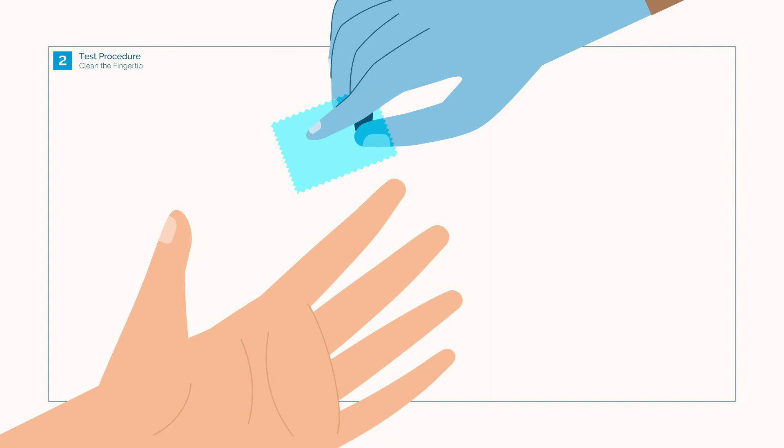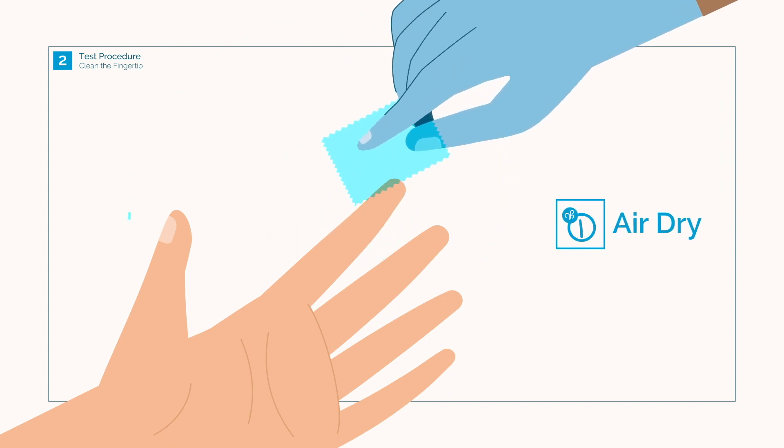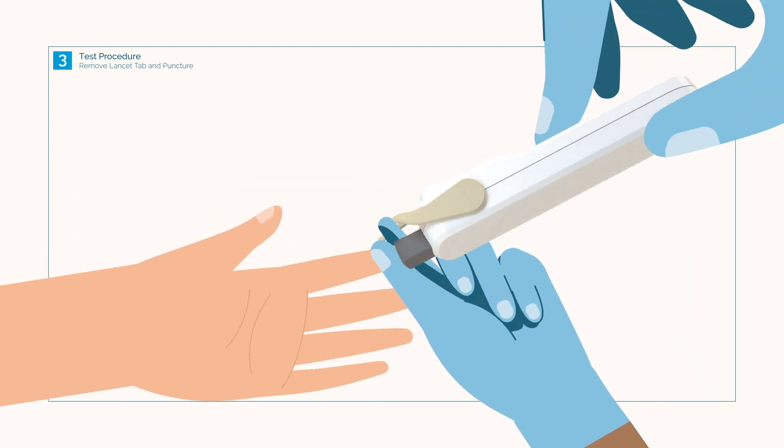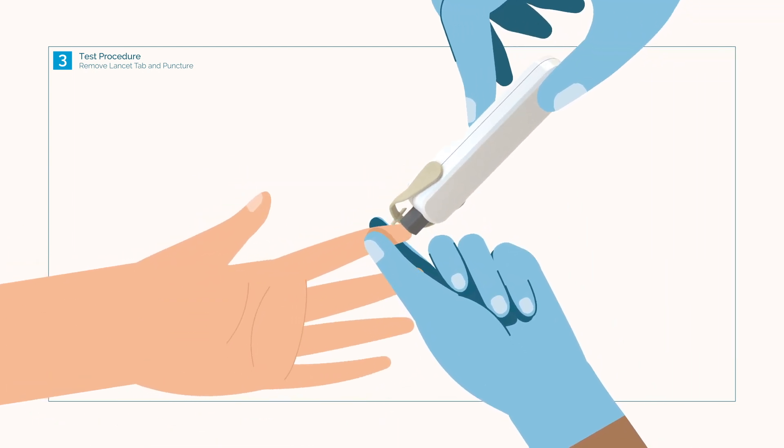Clean the fingertip with an alcohol pad and air dry. Twist and remove the protective lancet tab covering the retractable safety lancet and press firmly to puncture the skin.